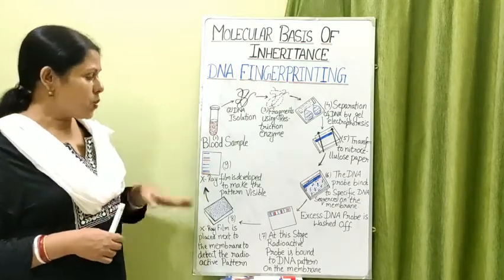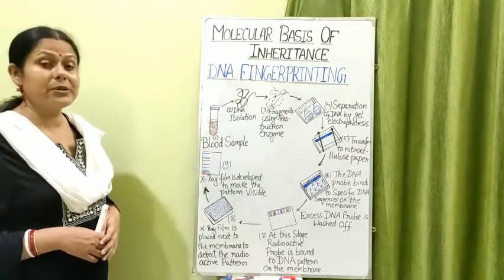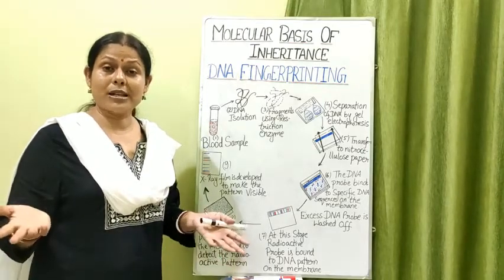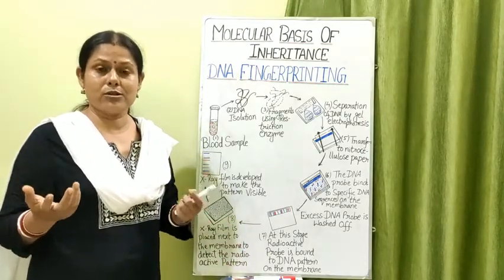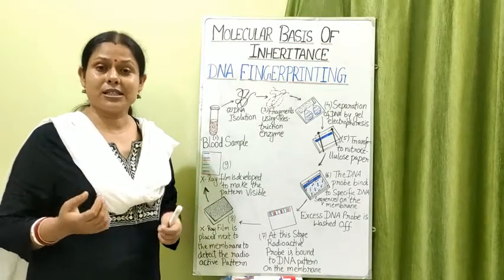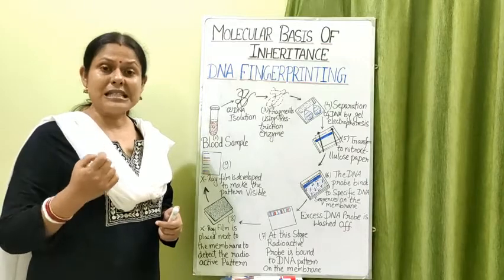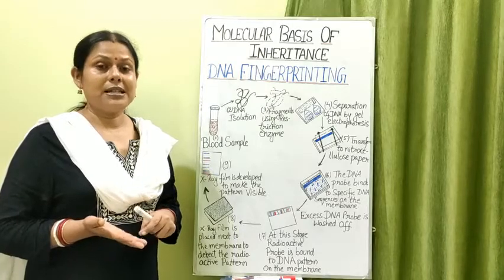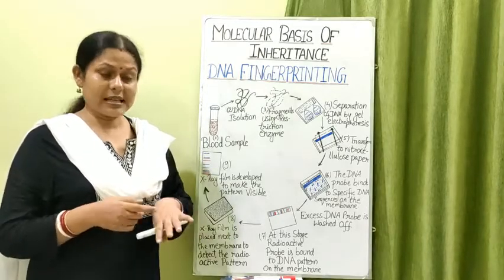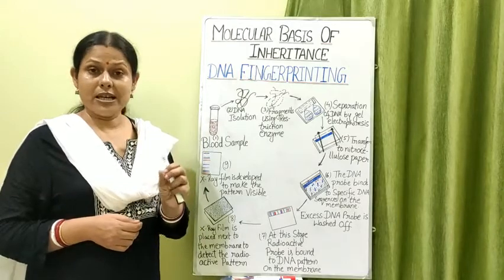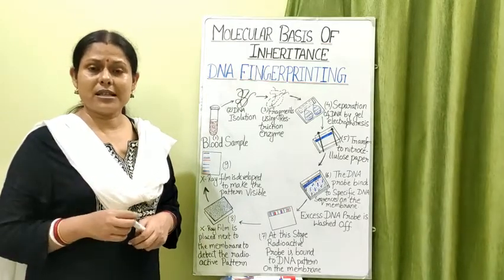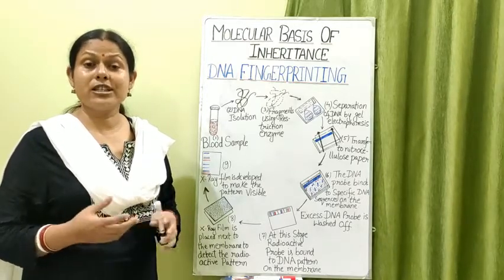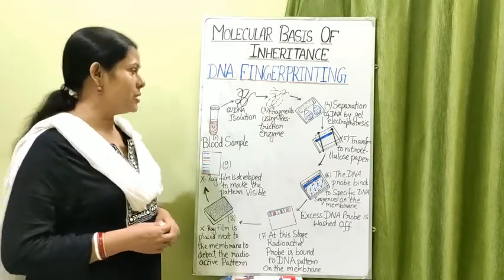DNA fingerprinting can be done using any body cells — any somatic cells or gametes — because all cells have the same genetic sequences. The sample needed is just a living cell. It can be from blood, semen, root hair cells, skin, or nails. Any body part containing a living cell can be taken as a sample for DNA testing, also called DNA profiling or DNA fingerprinting.